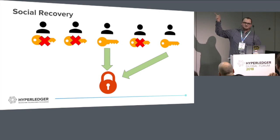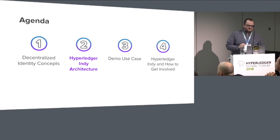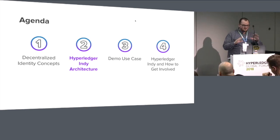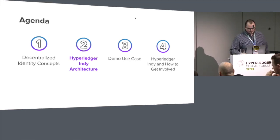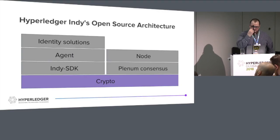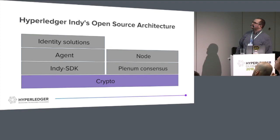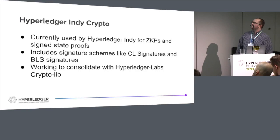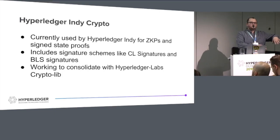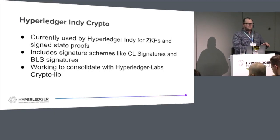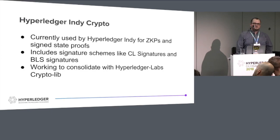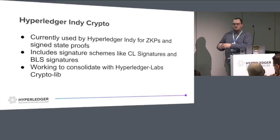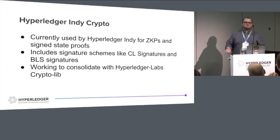We are now to the second part of the agenda - the Indy architecture. What exists in Indy right now: we've got the crypto repository, which is currently used by Hyperledger Indy for zero-knowledge proofs and state proofs. We've decoupled our cryptography out to a separate repository and we're actually combining it with Hyperledger Ursa. A large portion of Hyperledger Ursa right now is taking a lot of the Indy crypto code along with Sawtooth and Fabric code and combining it all together. Engineers at the Sovrin Foundation are working to contribute and merge that code.